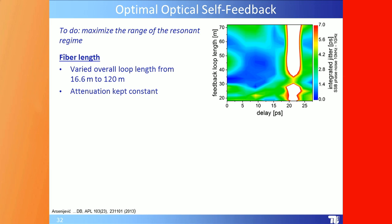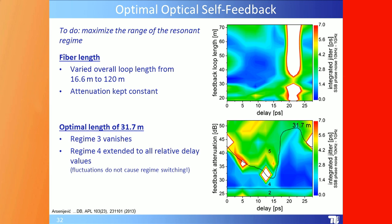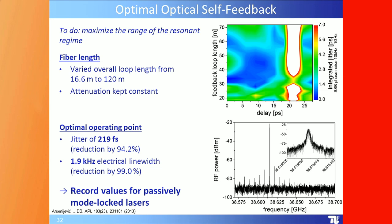Varying fiber length between 16 and 120 meters at constant attenuation, the optimal length was found to be 31 meters. At this point region 3 vanishes and region 4 extends to all relative delay values. The result: jitter of 219 femtoseconds instead of 3–4 picoseconds — a reduction of 94% — and electrical linewidth reduction of 99%. These are record values for passively mode-locked lasers.